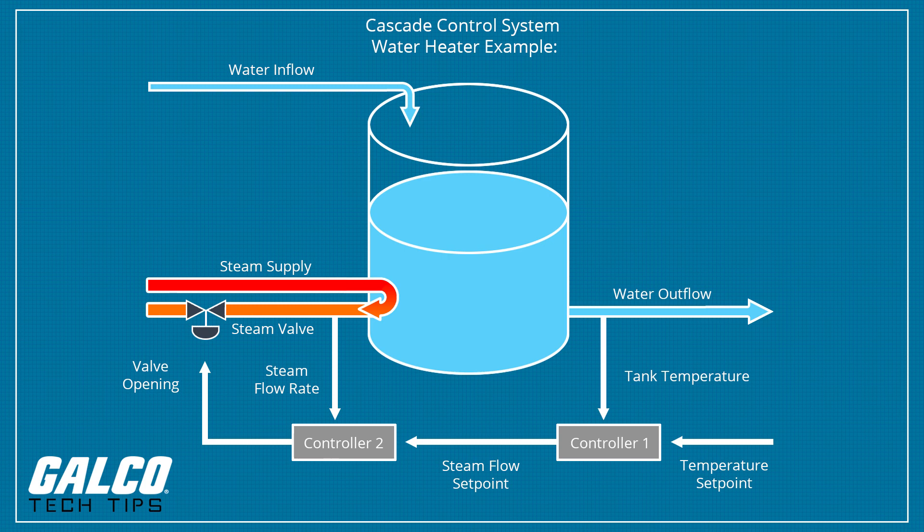In this example, the primary controller's output determines the setpoint for the secondary controller. The secondary controller's output is then used to adjust the control variable. The secondary controller will generally change quickly while the primary controller changes slowly.